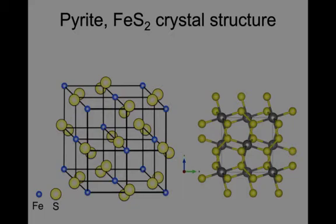The blues are iron, and the yellows are sulfur. Each one of the sulfurs is paired with a second sulfur.